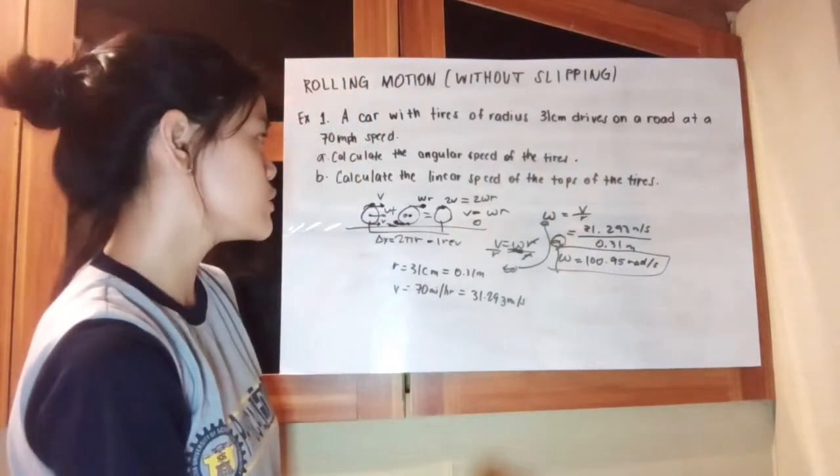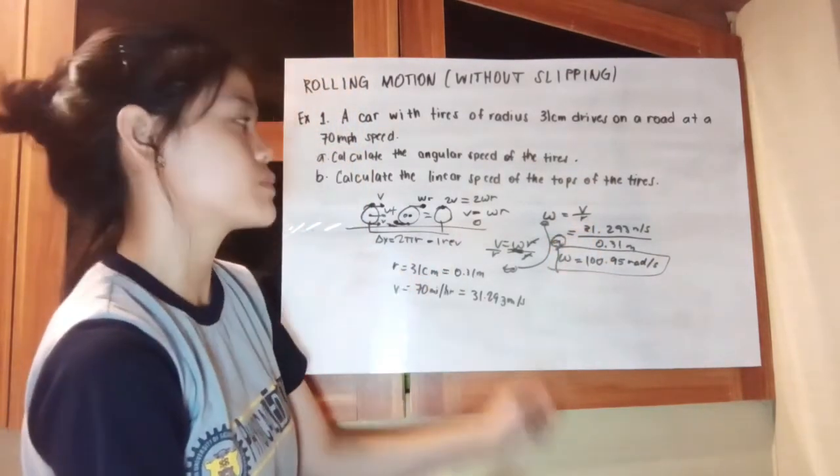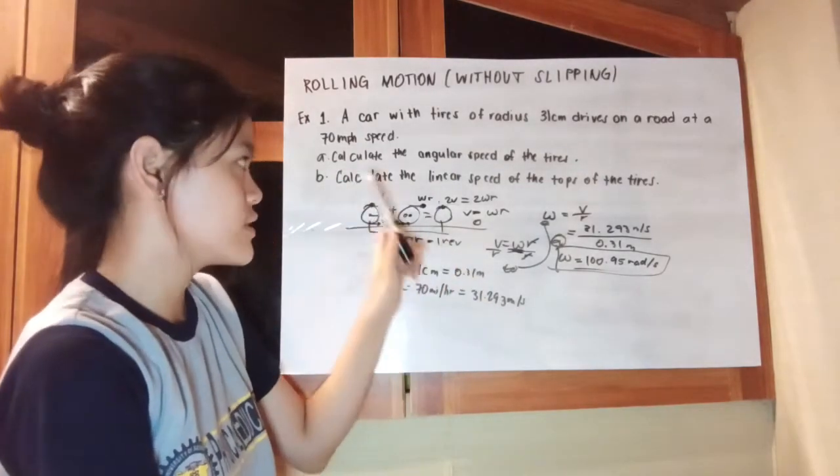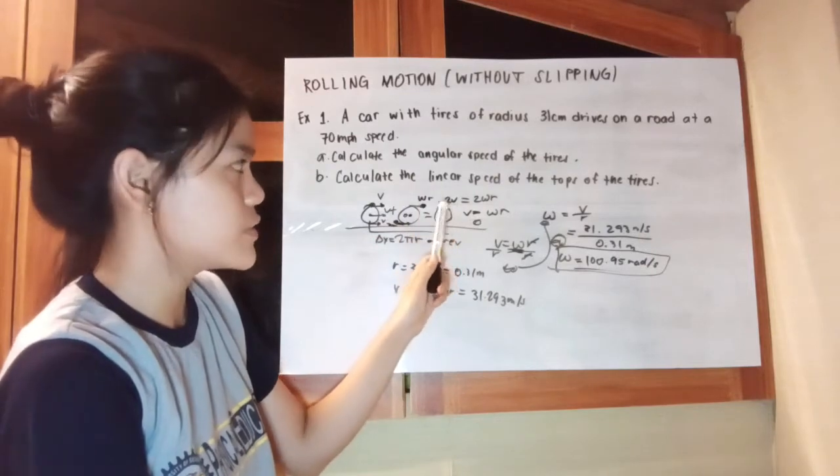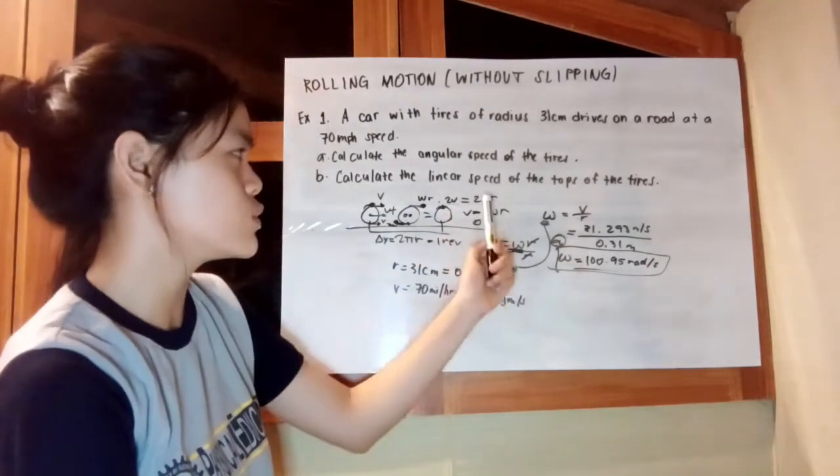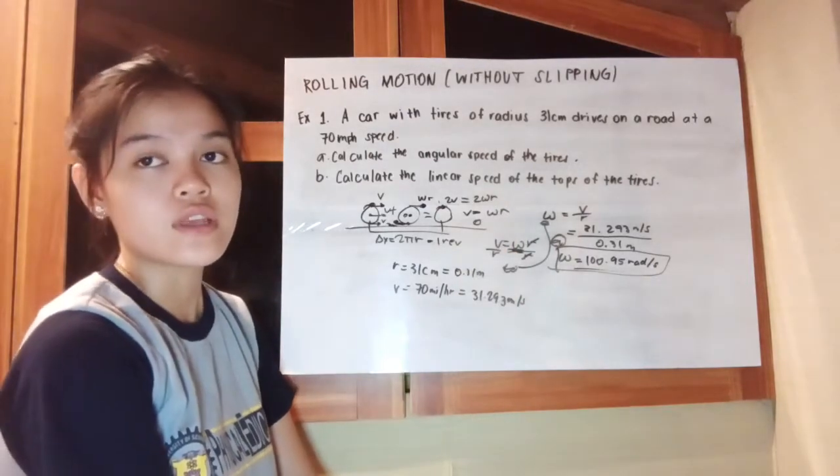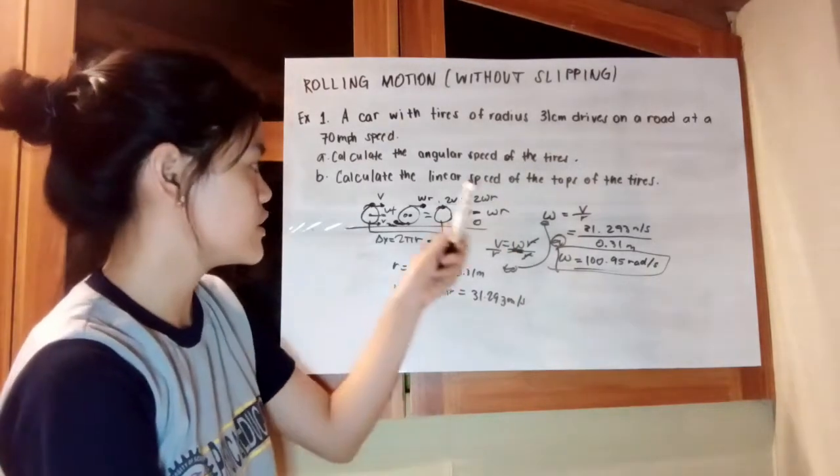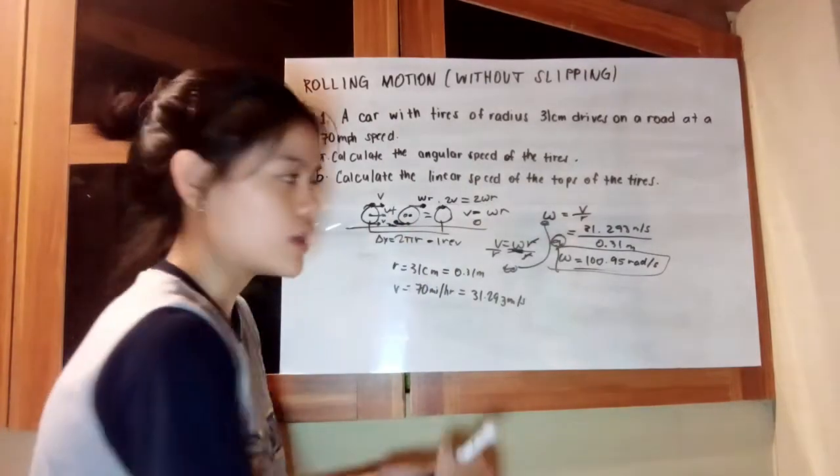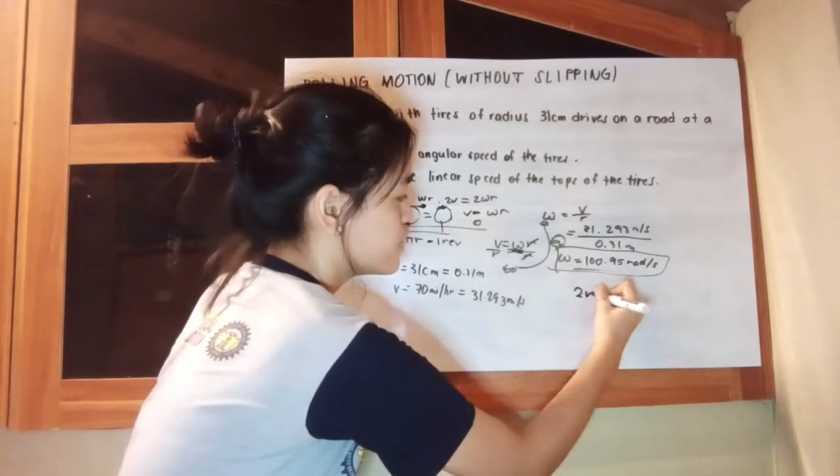For the second one, we are looking for the linear speed of the tops of the tires. As we can see here earlier, we already know that the final linear speed of the tops of the tires is equivalent to 2v or 2ω times radius of the tires. Since we are looking for linear speed, we are just going to use the velocity.